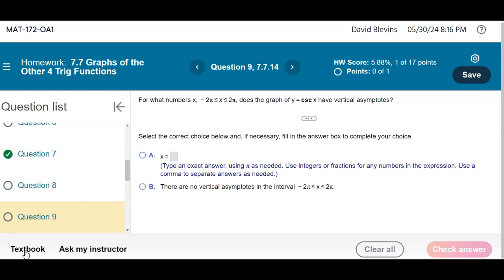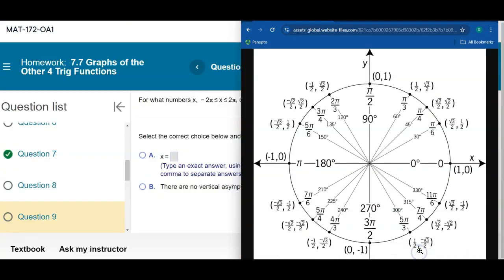Remember, cosecant is the reciprocal of the sine function. When looking at the unit circle, the y-coordinates on the unit circle are given by the sine function. So what's being asked here is where is sine equal to zero? Where are the y-coordinates zero?